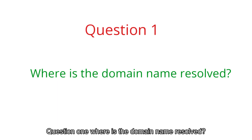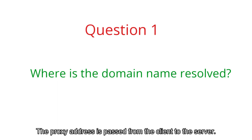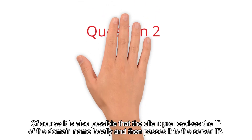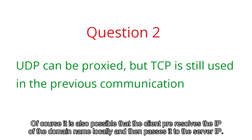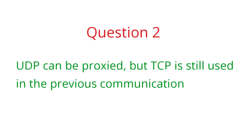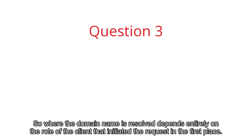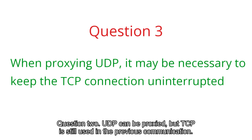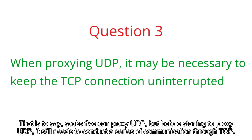Question 1: where is the domain name resolved? Same as HTTP proxy — if the client passes a domain name, it is resolved on the server; if the client pre-resolves locally, it passes an IP address. Where the domain name is resolved depends entirely on the client that initiated the request. Question 2: UDP can be proxied, but TCP is still used in prior communication. That is, SOCKS5 can proxy UDP, but before starting to proxy UDP, it still needs to conduct a series of communications through TCP.